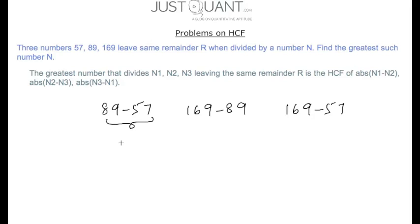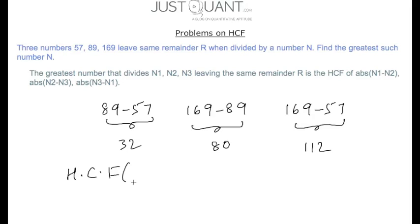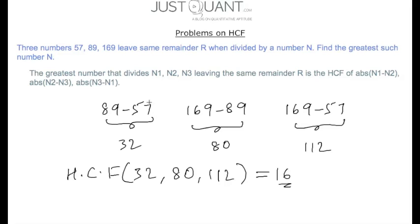This gives us 32, 80, and 112. Calculating the HCF of 32, 80, and 112 we get 16, which is the greatest number that divides 57, 89, and 169 leaving remainder r. We subtract the smaller number from the larger to ensure the result is positive, which is why we use the absolute value of the differences. I hope this video is clear — thanks for watching.